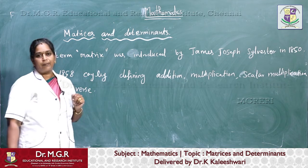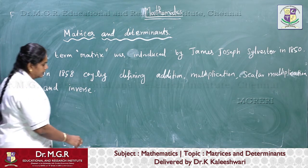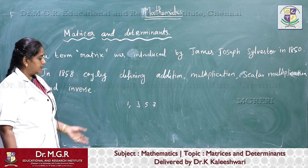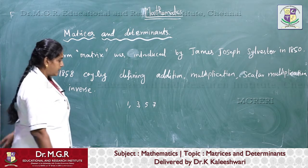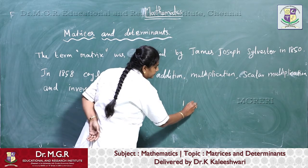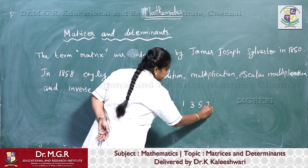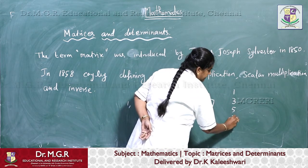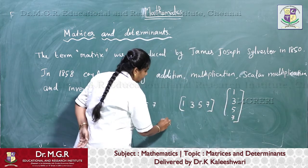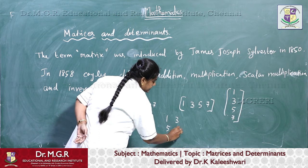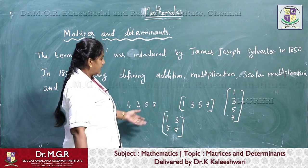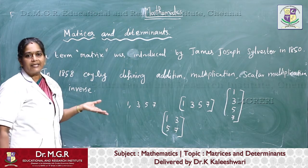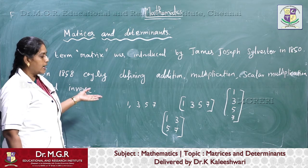Now let us consider the numbers 1, 3, 5, 7. These are simply numbers, but they can be arranged in many ways — in a single row, in a single column, or in a 2×2 arrangement. These are arranged in rows and columns, and therefore such an arrangement is called a matrix. That is, a matrix is an arrangement of numbers in rows and columns.